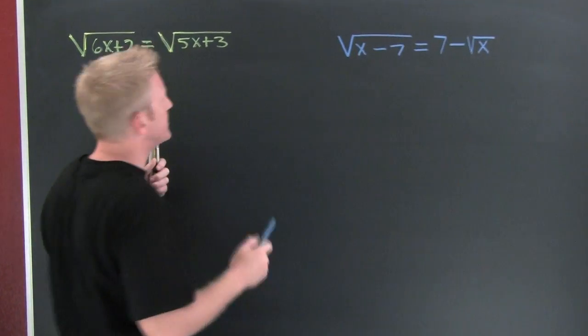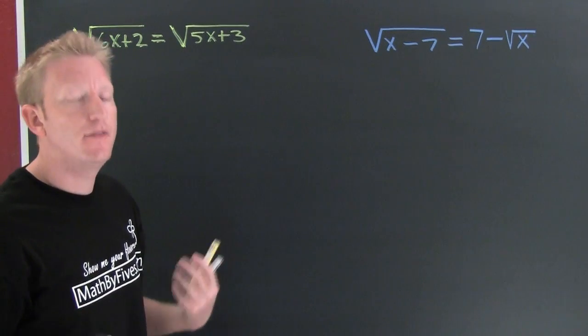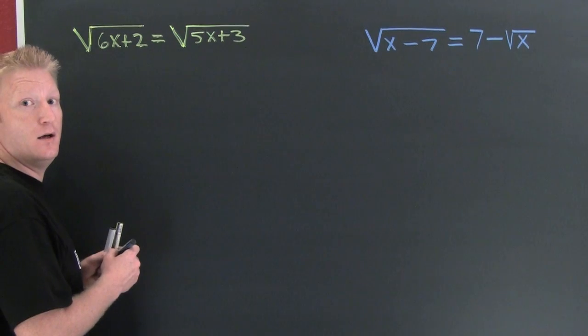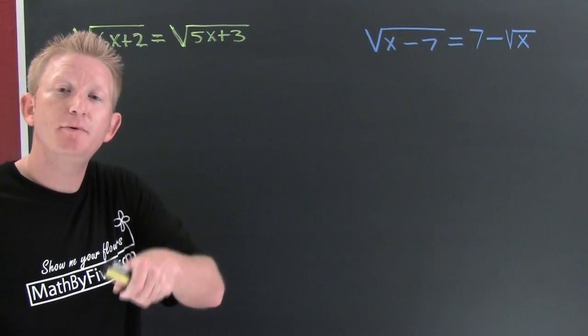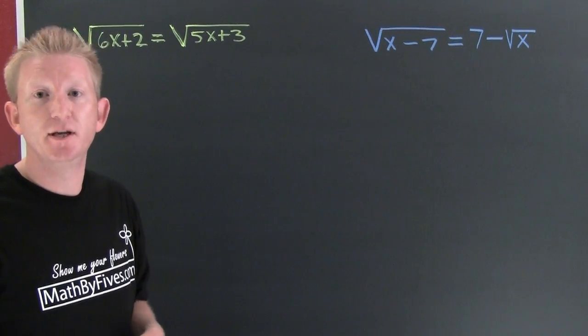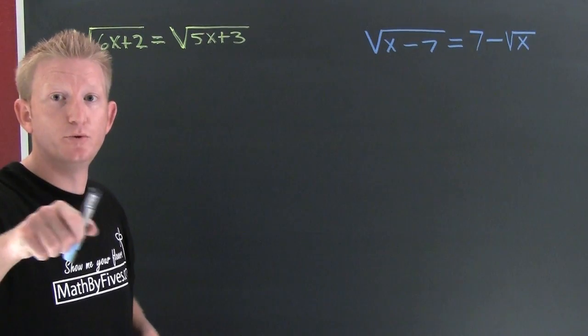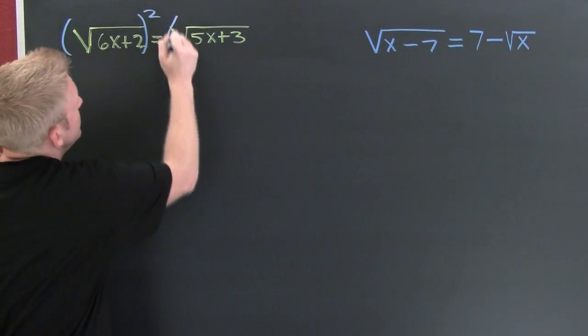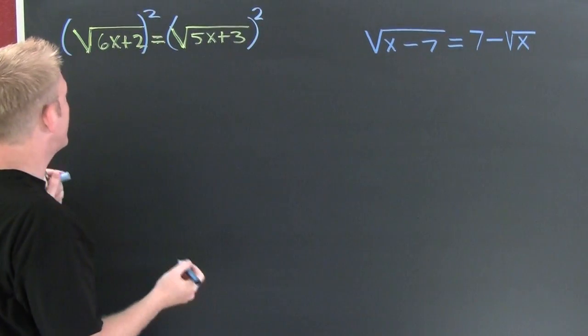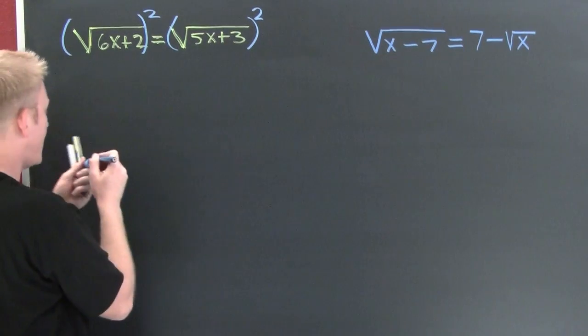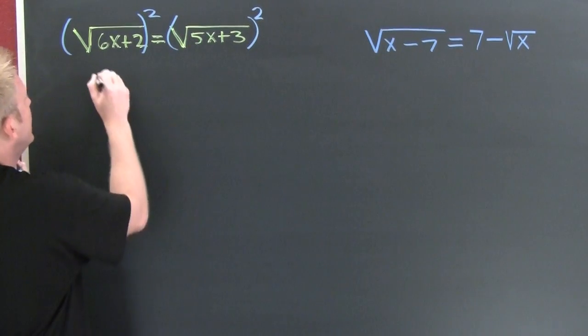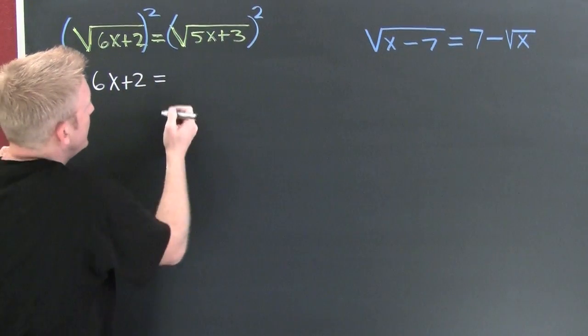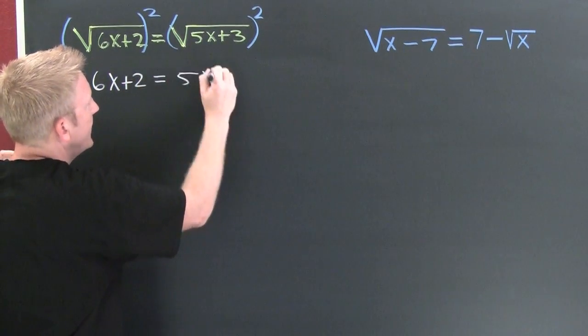We need to isolate one of our roots here, they're both in isolation. Square both sides, but remember when you square both sides you could be introducing extraneous roots. Square the left side and square the right side. On the left I have my radicand, six x plus two, and that's supposed to be equal to five x plus three.